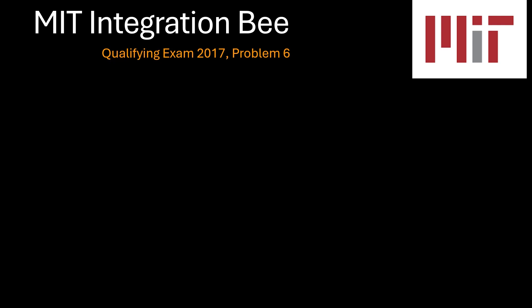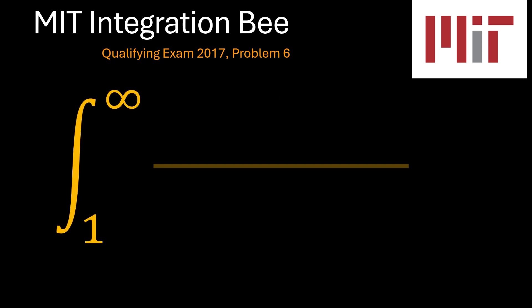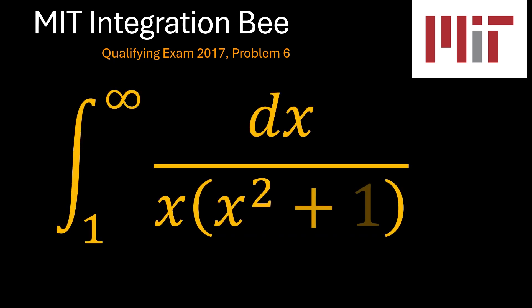On to problem number six of the MIT integration, example 17, which is a definite integral from x equals 1 to x tending to infinity of 1 over x times (x squared plus 1). This is an interesting problem. We have two methods for solving it: one involving pure substitution, and the other involving a trigonometric function substitution.